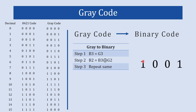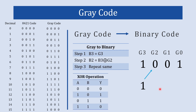Now we are going to understand how to convert gray code into binary code. Let's take gray code 1001. In step one, b3 = g3, so the MSB of binary code is the same as the MSB of gray code — we write 1. In step two, b2 = b3 XOR g2. So 1 XOR 0 — both inputs are different — gives us b2 = 1.